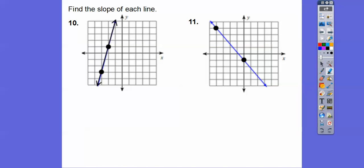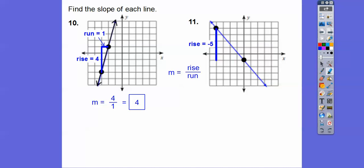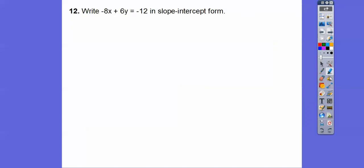When they give you a picture, it's easiest to do rise over run — from the left point to the right point. Start here: it goes up how much, then over how much. Our rise is 4 and our run is 1, so the slope is 4 over 1, or 4. On the next one, the rise goes down so it's negative, and we still go right: rise is negative 5, run is 4, so the slope is negative 5 over 4.